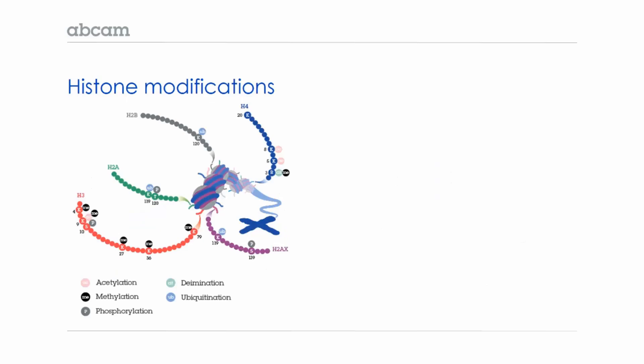Here is a diagram of some of the different modifications that occur on the histone tails. Histones H3 and H4 are the most commonly modified histones whose residues are targeted for acetylation, methylation, phosphorylation, deimination, and ubiquitination.